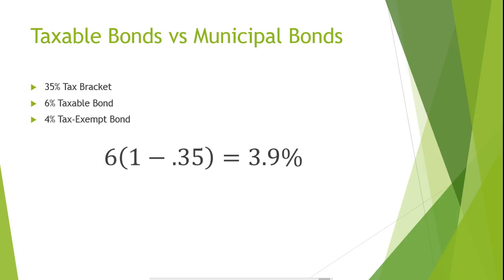If we plug in our figures, we find that the after-tax return is 3.9%: 6 times (1 minus 0.35) equals 3.9%, which is less than the 4% return provided by the tax-exempt investment. This means that we should invest our money in the tax-exempt security, even though its explicit return is lower than the explicit return of the taxable investment.